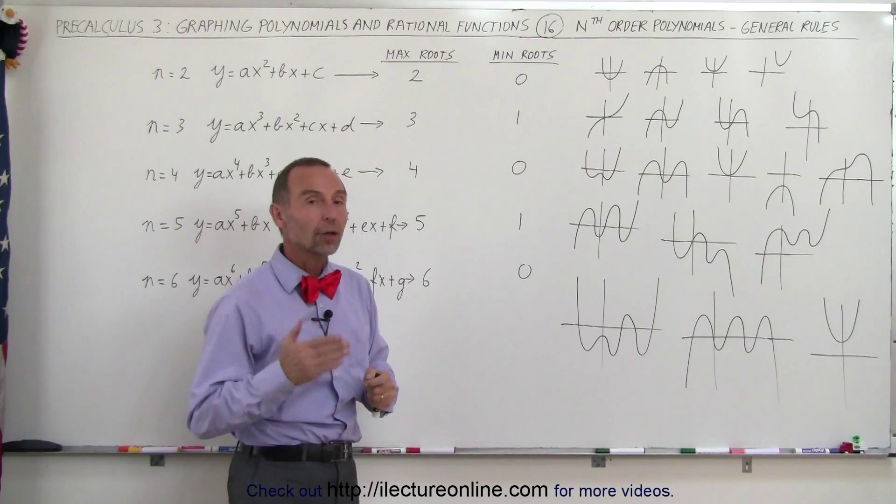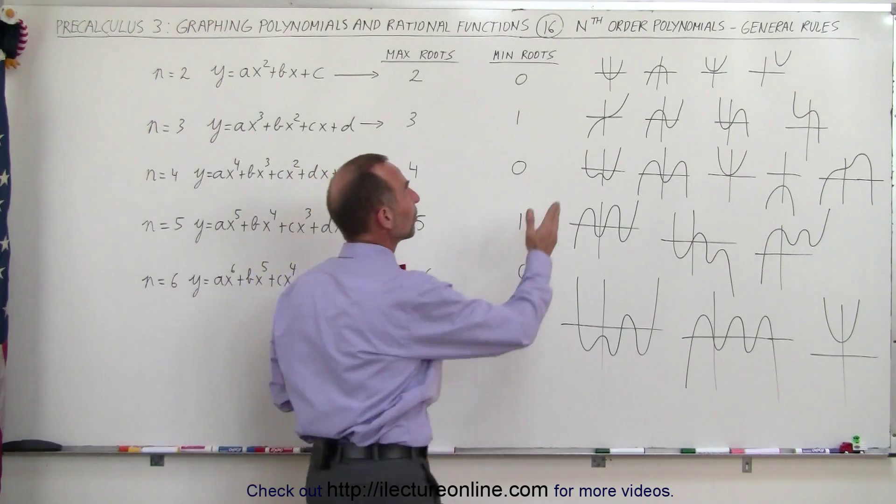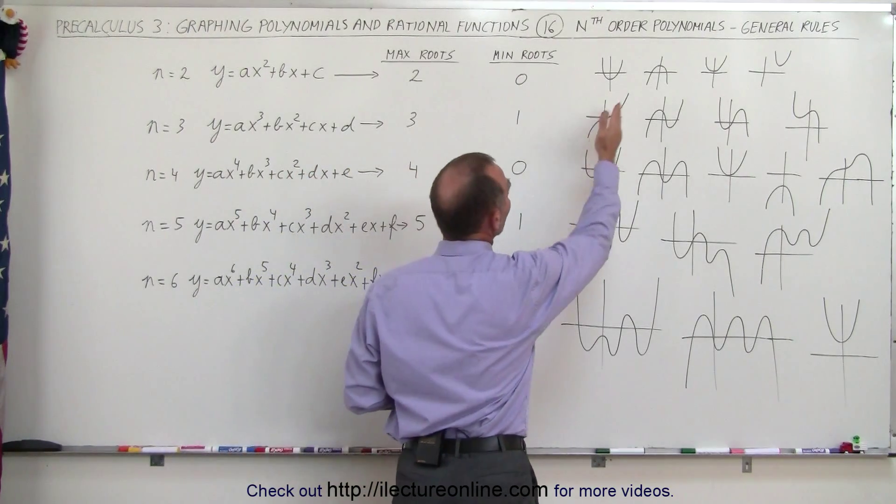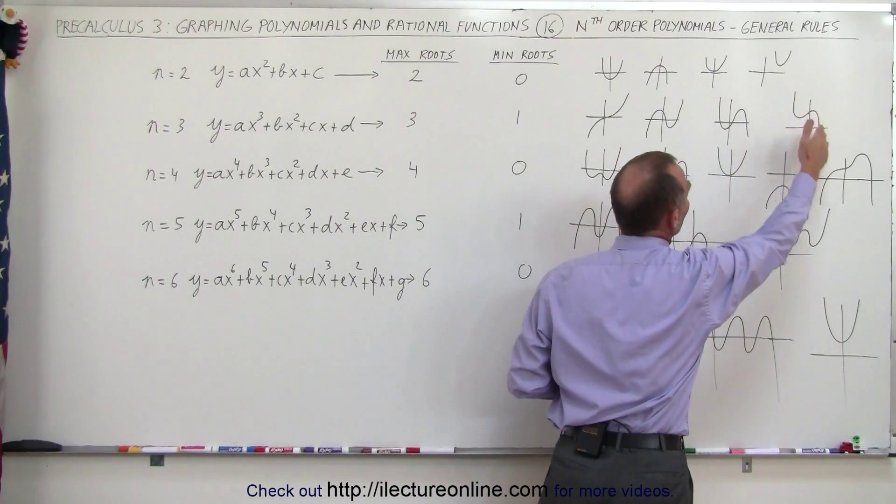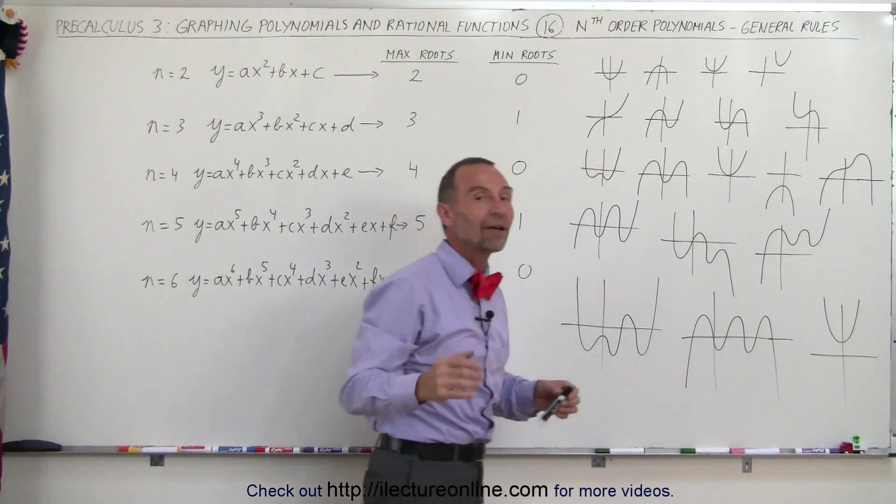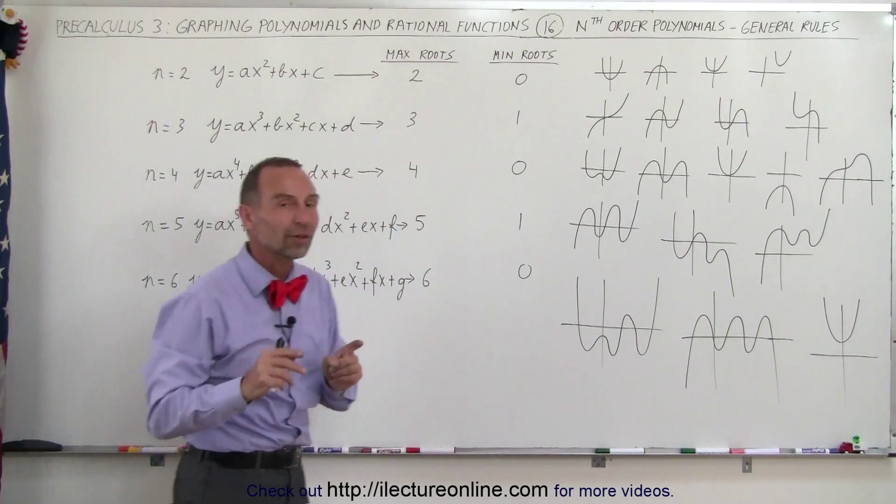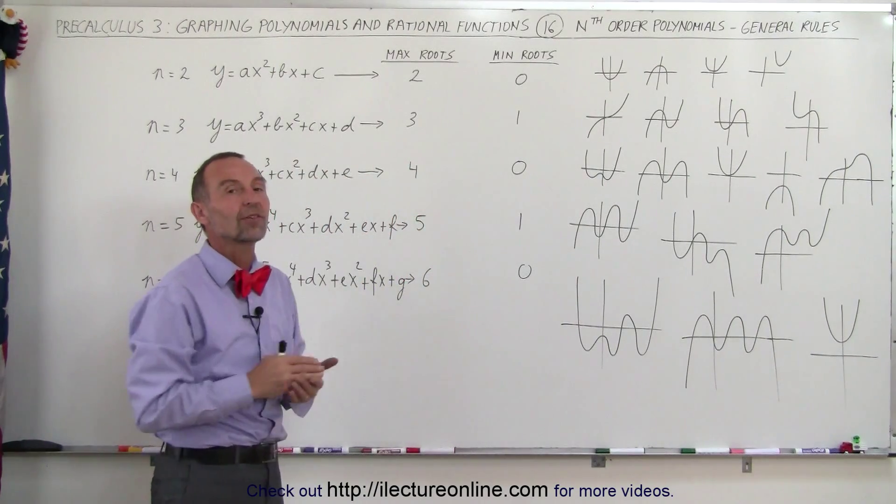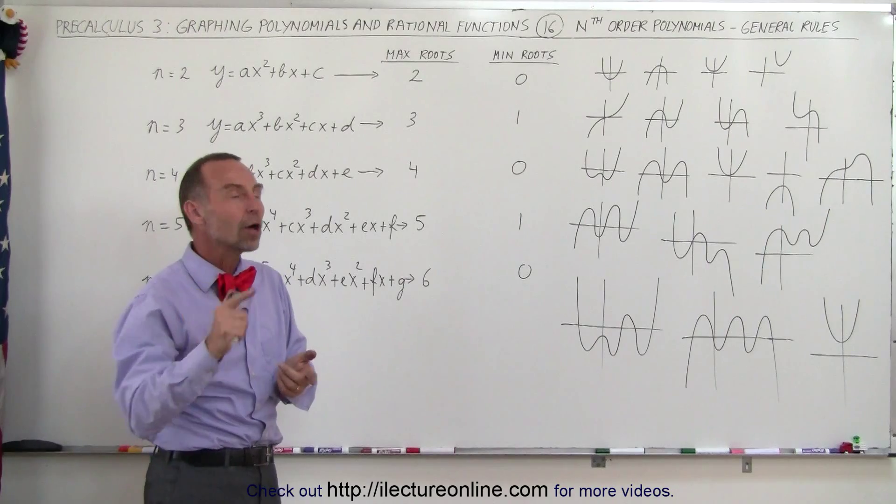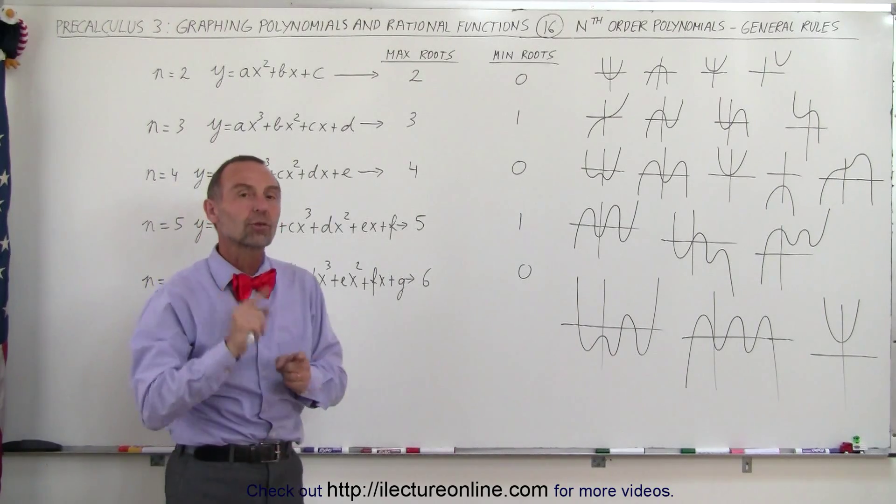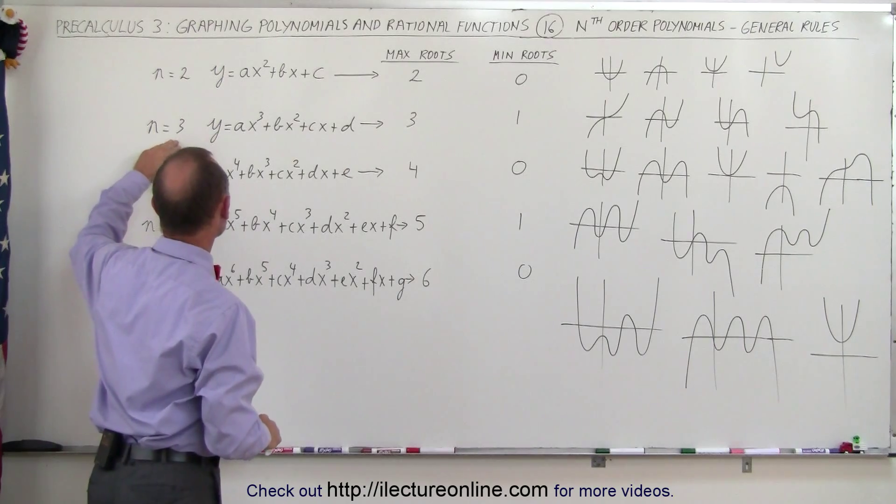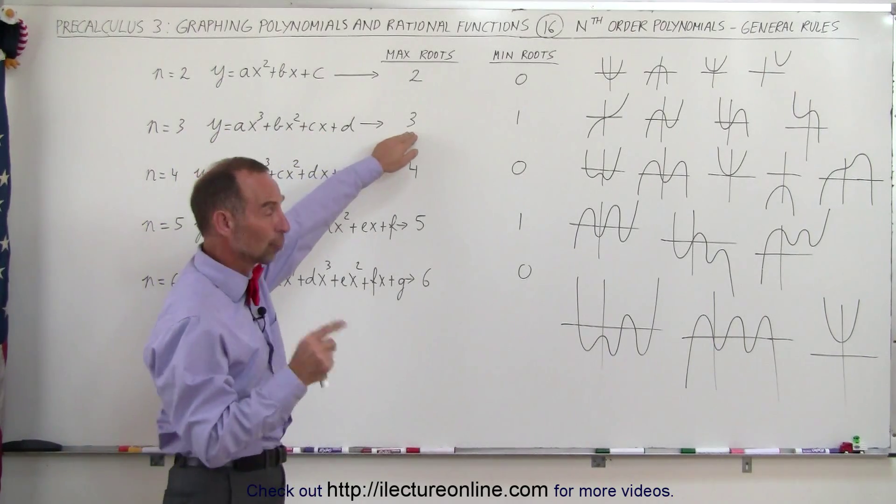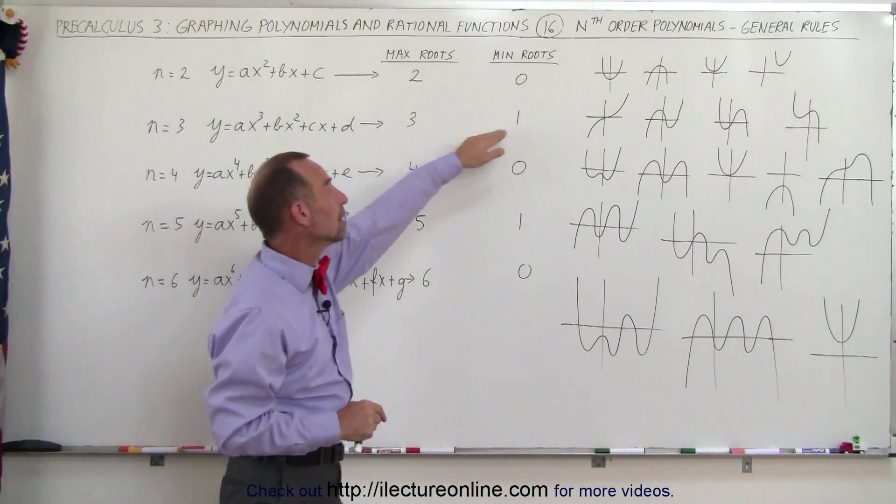Notice when you have an odd-order polynomial, it starts from the negative side on one side and ends up at the positive side on the other, or it starts at the positive side and ends up on the negative side for the y-values. So at one point, somewhere, it must cross the x-axis. So all odd-order polynomials must cross the x-axis at least once, and therefore, a third-order polynomial has a maximum number of roots of 3, equal to the order, and a minimum of 1.